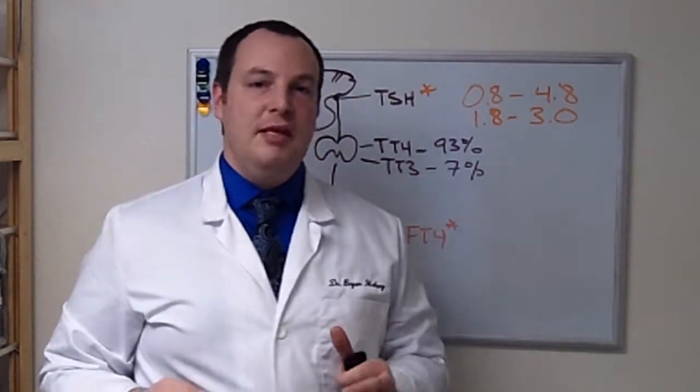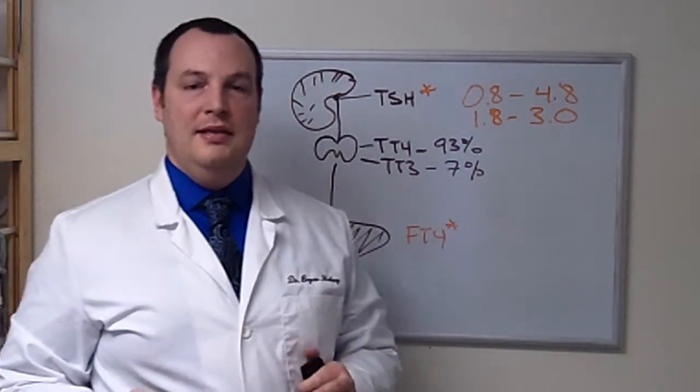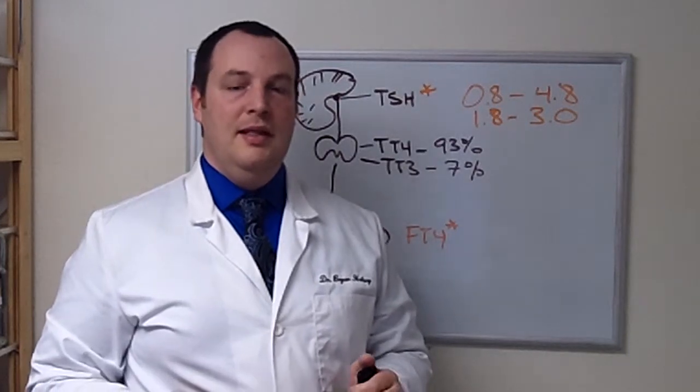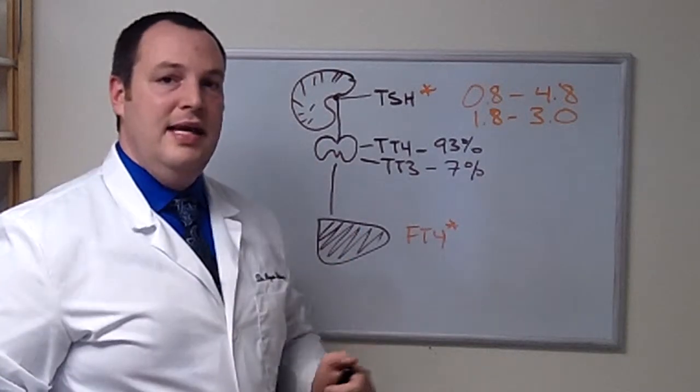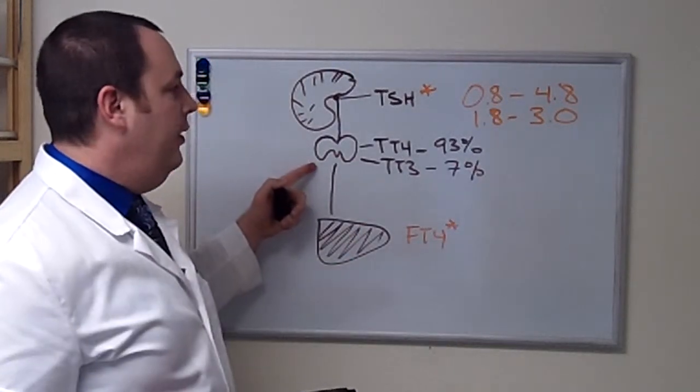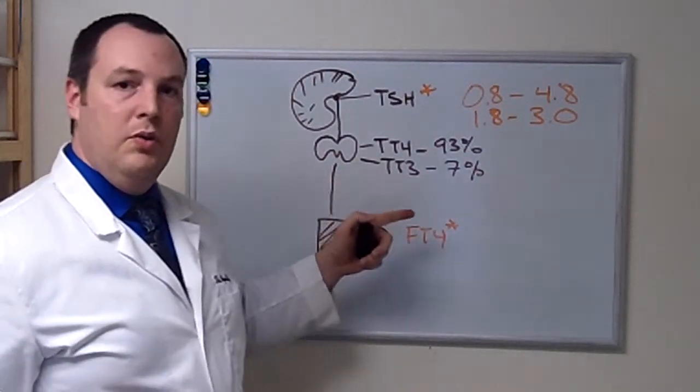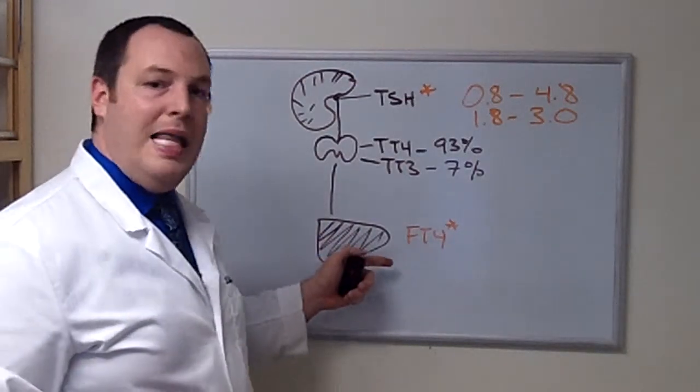So we've been briefly reviewing the steps in thyroid hormone metabolism. Last time we spoke, we talked about TSH and how it talks to the thyroid gland, now secreting total T4 and total T3, which travels through the body.